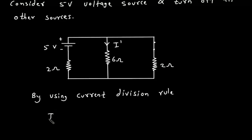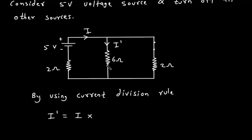I prime is equal to the total current I multiplied by the opposite branch resistance using the current division rule. The parallel resistor to this 6 ohm is 2 ohm, so it is 2 divided by 2 plus 6.